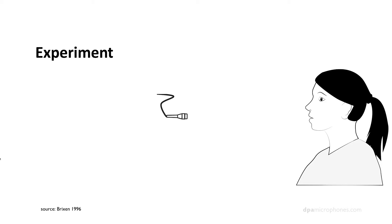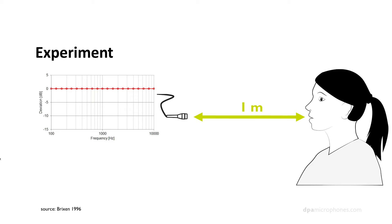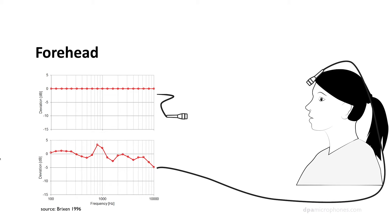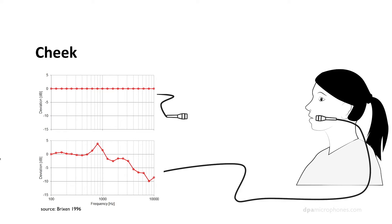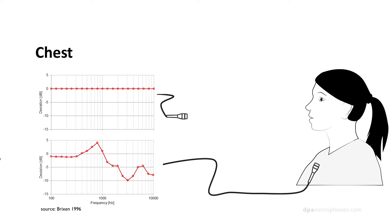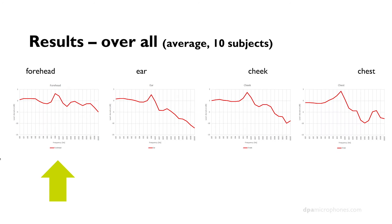The experiment was that we took a microphone and placed it one meter away from a test person — ten test persons actually — recorded that, and that was our reference, our zero, the flat frequency response. We flattened it out in this experiment. Then we placed the microphone on the forehead and measured the difference from the one-meter position. We put one over the ear, one on a headset like I'm wearing, and one on the chest, and measured the difference. We did that ten times, and this is the average frequency response for the forehead — basically flat.